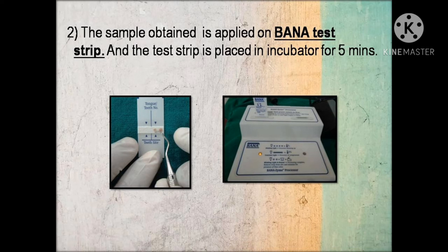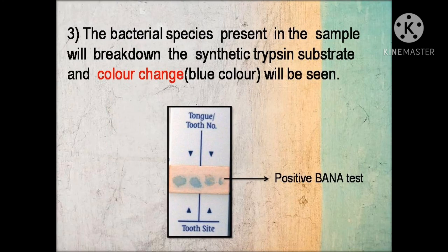The strip is then placed in the incubator for five minutes. The bacterial species present in the sample will hydrolyze the BANA substrate and produce a visible color change on the test strip. When a blue color appears on the test strip after five minutes, it indicates a positive BANA test.